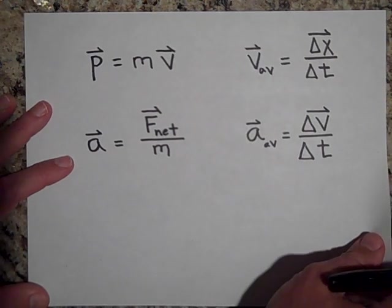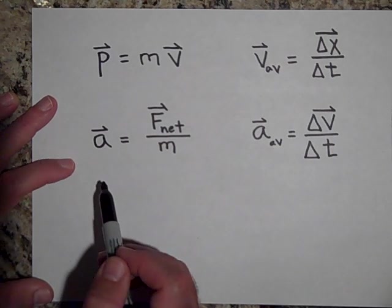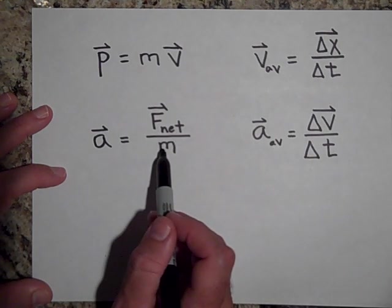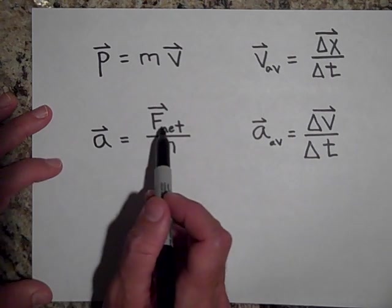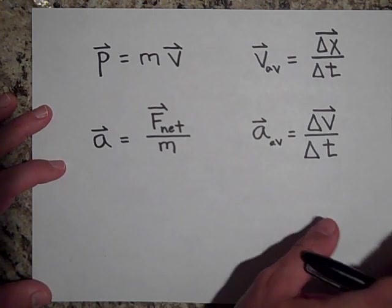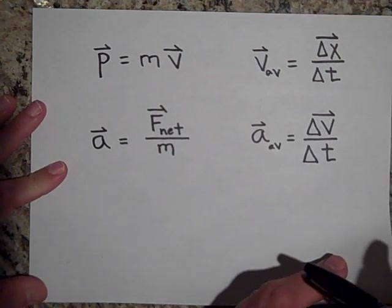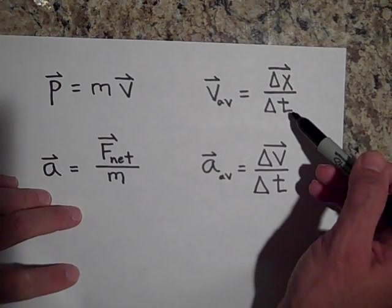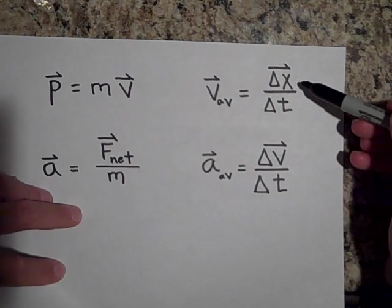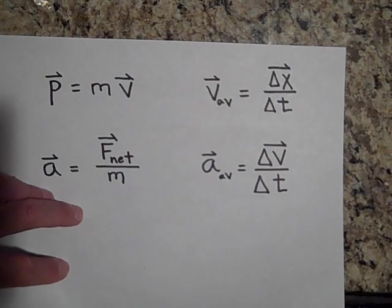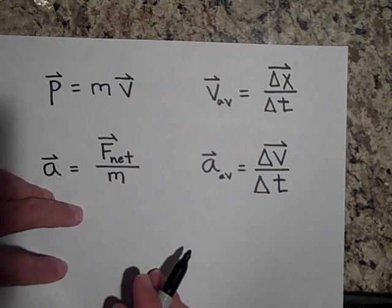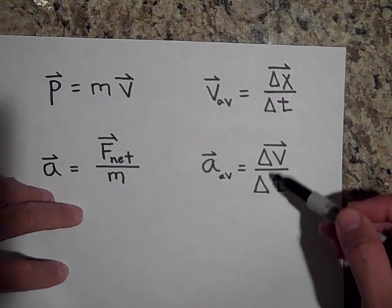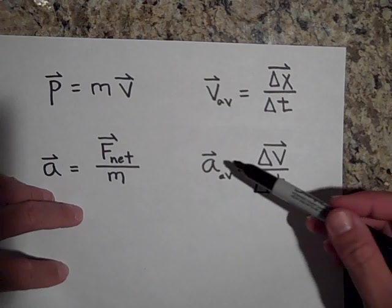Dividing by a scalar doesn't change the direction either. In Newton's second law, a equals F-net over m — dividing F-net by a scalar m doesn't change direction, so acceleration a and F-net are always in the same direction. Similarly, average velocity is displacement divided by a scalar, so displacement is always in the same direction as average velocity. And average acceleration is always in the same direction as delta-v.